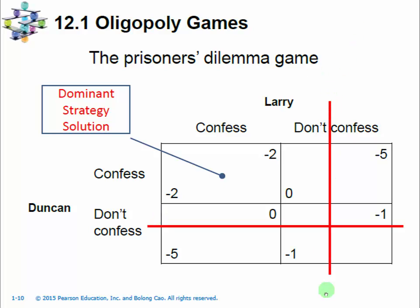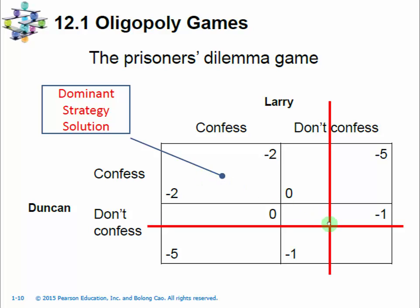We can cross out 'do not confess' for Larry and 'do not confess' for Duncan. We end up in the cell where both players get two years in prison. Obviously, this is not the best outcome possible, because if neither of them confesses, they only stay in prison for one year each. But because they are playing their dominant strategies — both players are rational and behave rationally — they got an outcome that is not the best.